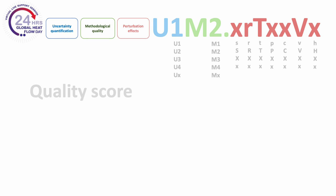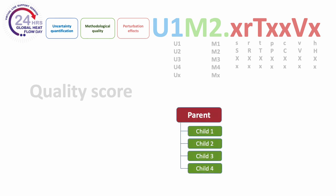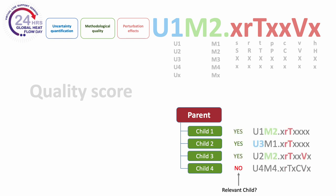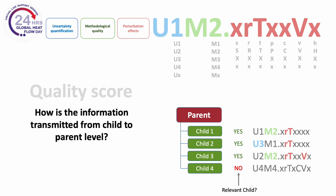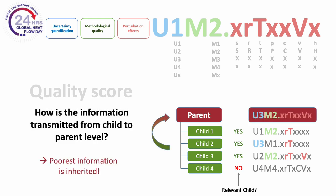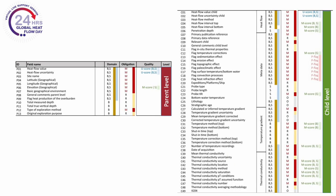Finally, all three scores are combined to generate the overall IHFC quality score. The evaluation is performed on the child level. The scores from all relevant child entries — in other words, from every different heat flow measurement — are used to compute the quality score for the parent element. We take the conservative approach and assign the worst quality scores to the parent, so the parent score is inherited from the poorest child information. In order to assign quality scores for each heat flow value in the database, all parameters which provide relevant information for the quality scheme are defined as mandatory in the database. You can see the mandatory elements in red here.